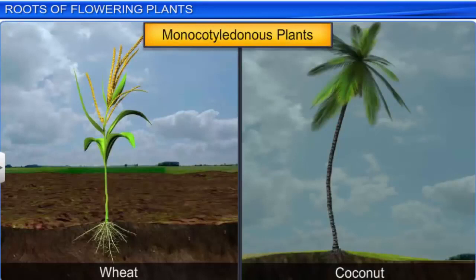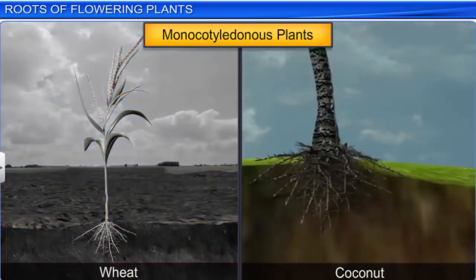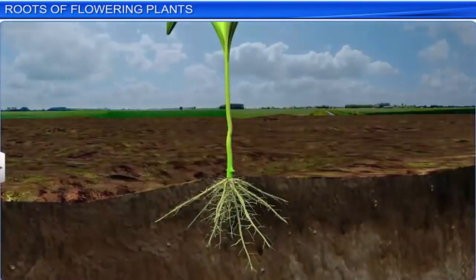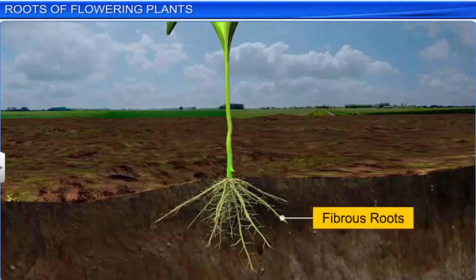In monocotyledonous plants like wheat and coconut, the primary root is short-lived and is replaced by a network of many large and small roots originating from the base of the stem. This network of roots forms the fibrous root system. These fibrous roots spread laterally and do not penetrate deep into the soil, unlike tap roots.